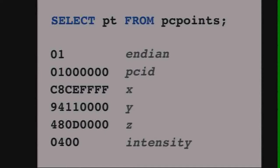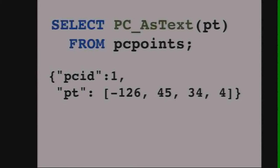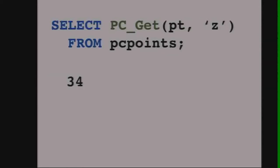That's the computer-readable version. We also have an as-text function that returns something humans can more easily interpret. Rather than OGC well-known text for the as-text output, I've stuck with emitting JSON — it's more likely that people already have pre-existing JSON parsers to slurp that data down. You can pull any dimension out of a point using the dimension name, which is the gateway for filtering. Here we're pulling Z out — value is 34.